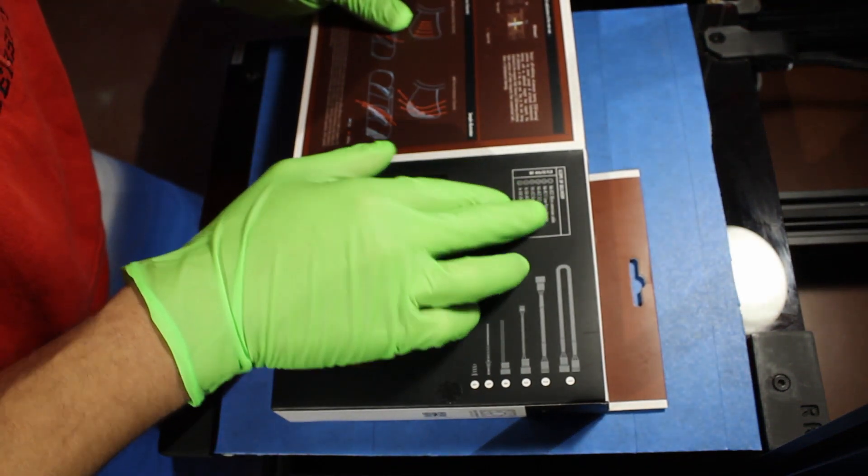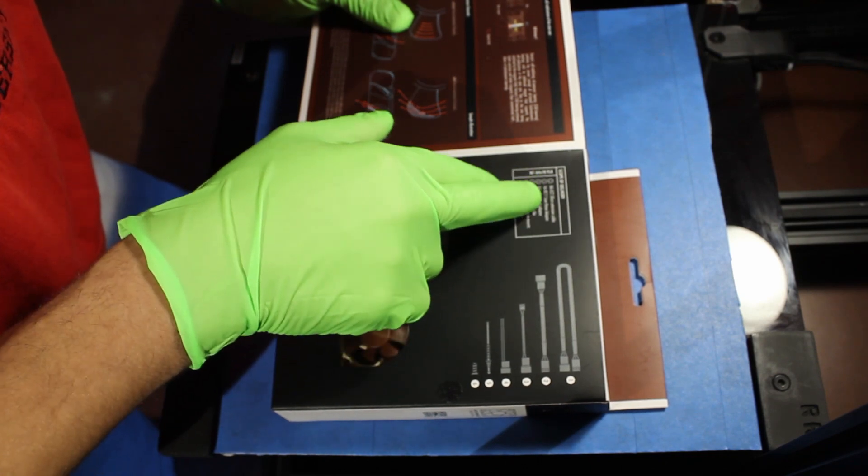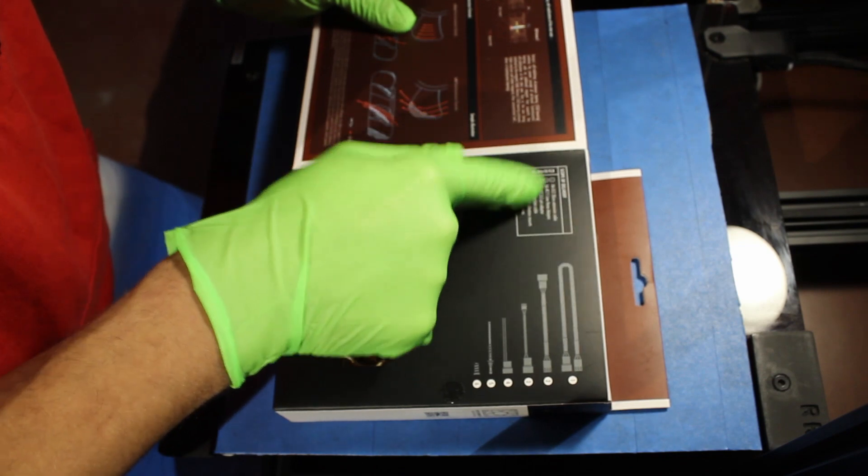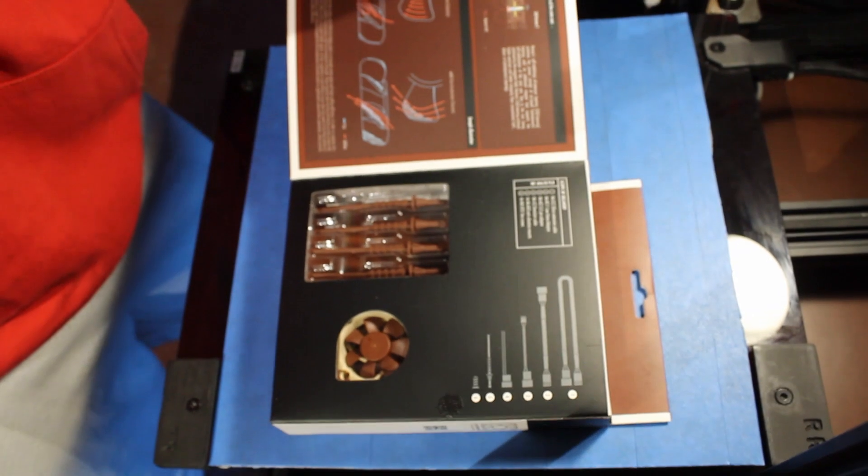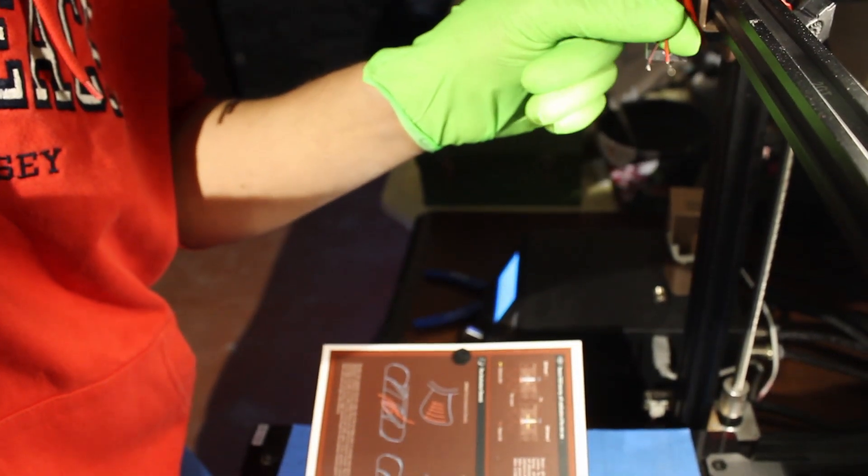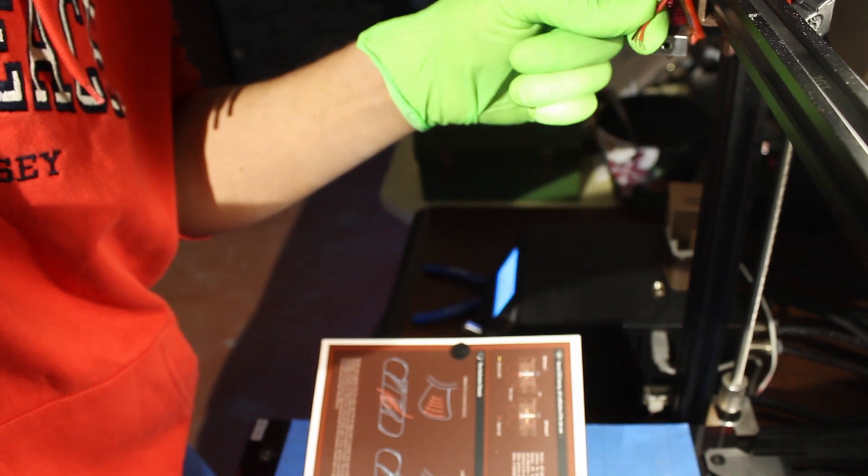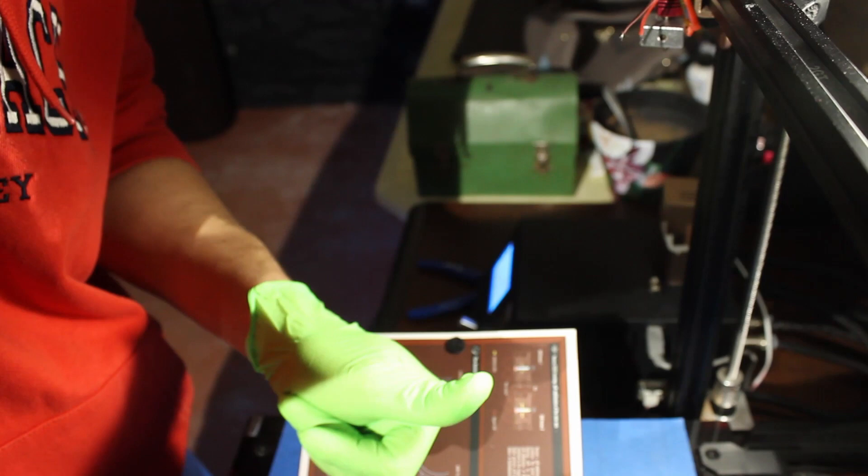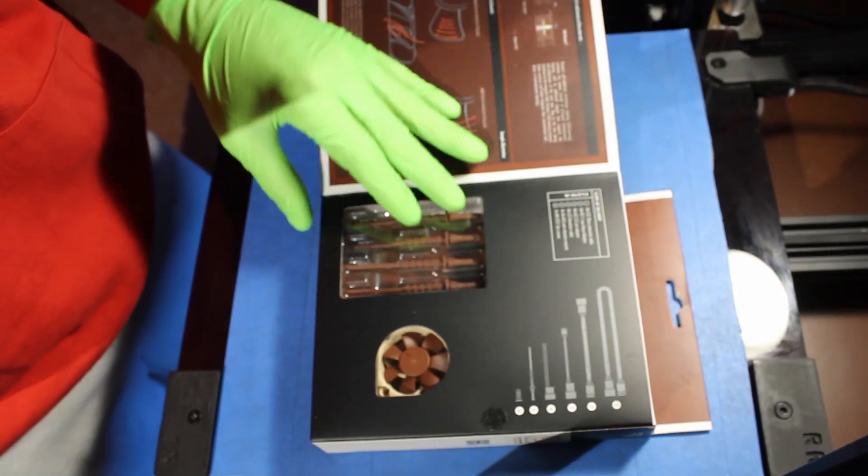So this comes with an extension cable, low noise adapter, three to two pin adapter. That's actually very important because on the Tevo Tornado the fan only has two wiring so that's actually going to come in handy.